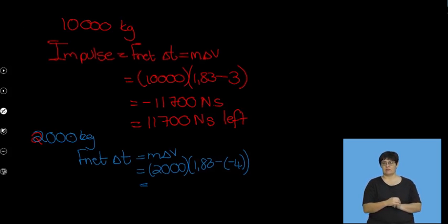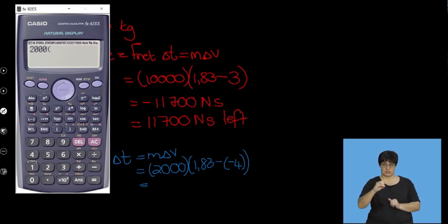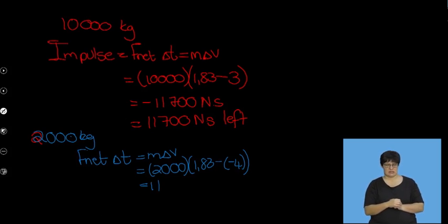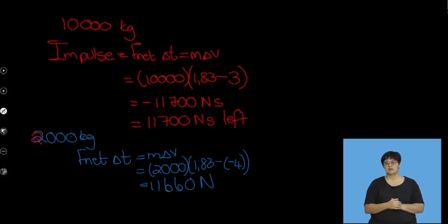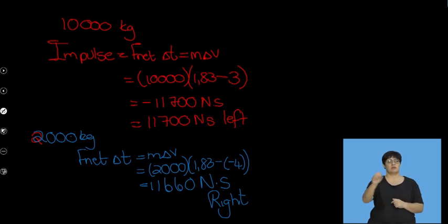Putting 2,000 times (1.83 minus (−4)) into the calculator, we get 11,660. Now you might notice those aren't the same values — one is 11,700, one is 11,660.